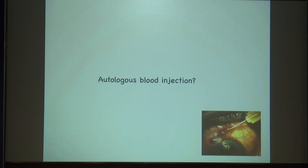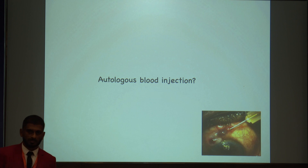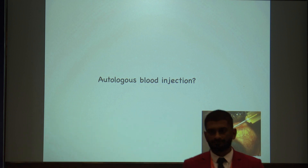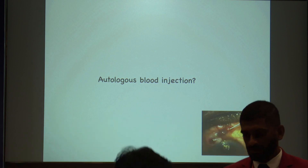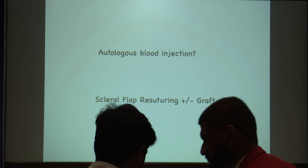Is autologous blood injection helpful? It is helpful initially — you take direct blood from the cubital vein and inject it directly into the bleb. But the problem is it increases fibrosis and healing. It will work for some time, but later on the bleb is invariably going to fail because it increases fibrosis and causes more scarring.